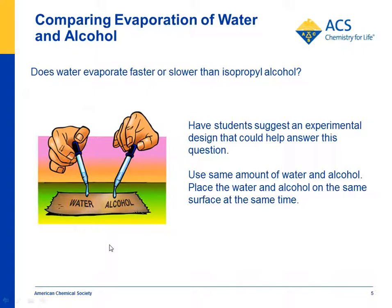To test whether water or alcohol evaporates faster, we ask students to help design the test. They want to use the same amount of water as alcohol, put it on some surface — in this case a brown paper towel — at the same time and in the same way, and see which one evaporates first. That's a fair test.